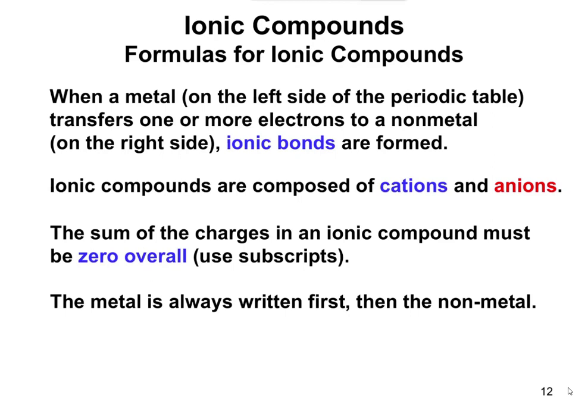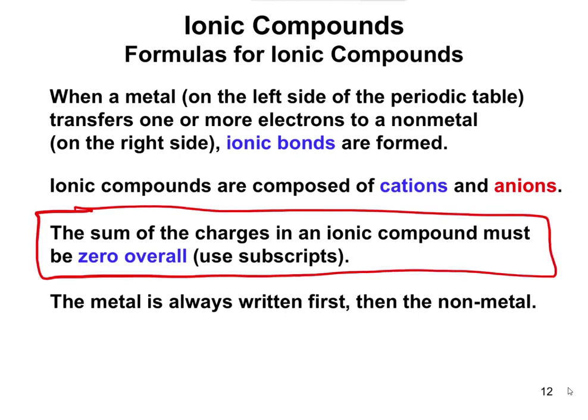The main take-home point is that the sum of the charges in an ionic compound must add up to zero. We're going to use subscripts to indicate how many of each ion are present, so that the amount of positive charge equals the amount of negative charge, making it add up to zero. For example, if you have a plus three charge, you have to have a minus three charge — plus three plus negative three adds up to zero. Subscripts identify the number of particular ions present.